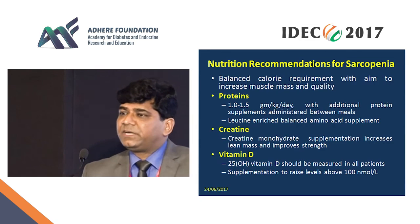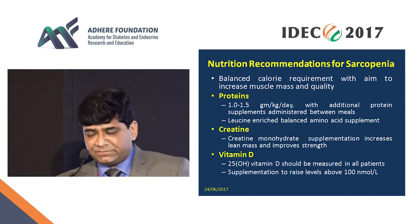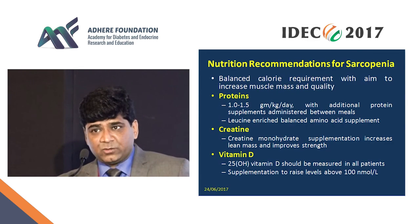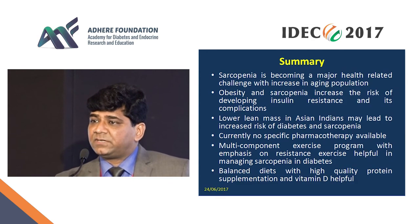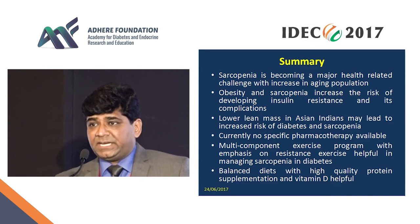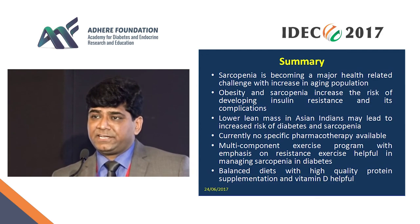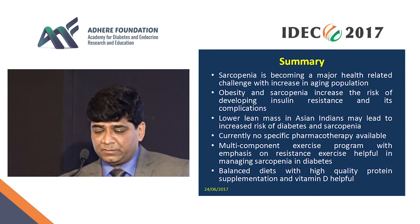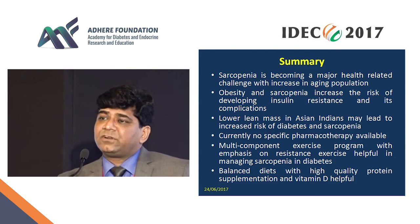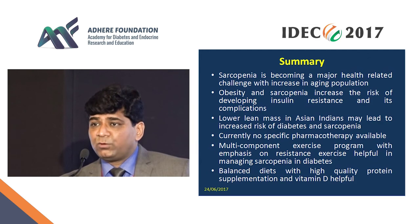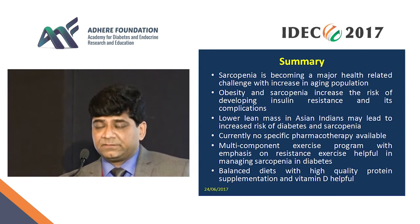In summary, sarcopenia is becoming a major challenge in the aging Asian population and is being recognized more frequently in younger individuals as well. Obesity and sarcopenia together increase the risk of insulin resistance and its complications. Asian Indians are more predisposed to develop sarcopenia and its related problems because they inherently have lower muscle mass and excess body fat compared to other groups. Currently, no specific pharmacotherapy is available. A multi-component exercise program with emphasis on resistance training is helpful. A balanced diet with high-quality protein and adequate vitamin D would be additionally beneficial. Thank you.